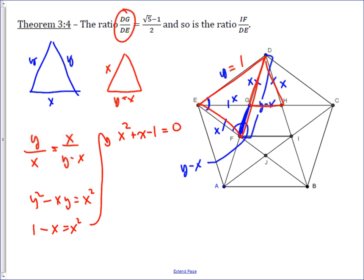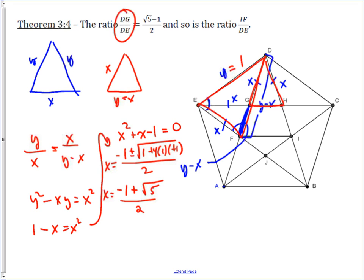Applying the quadratic formula, we get (−1 ± √(1 − 4·1·(−1))) / 2. Since X must be positive (it's a length), the square root must be greater than 1, so we take the positive root: X = (−1 + √5) / 2. This is the relationship between DG and DE.